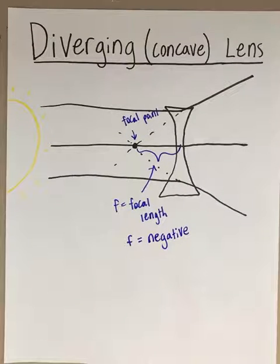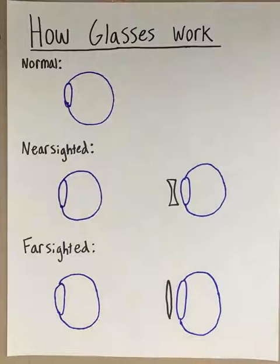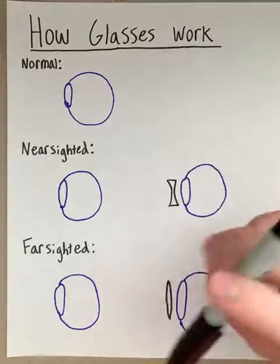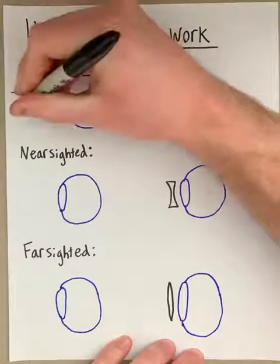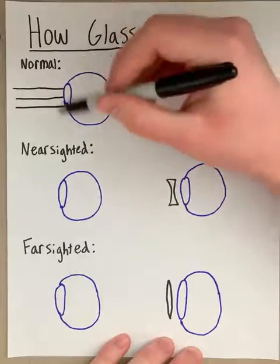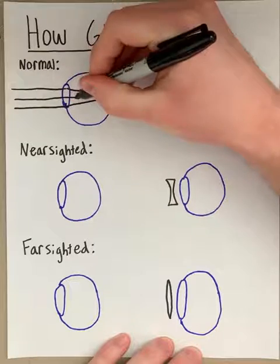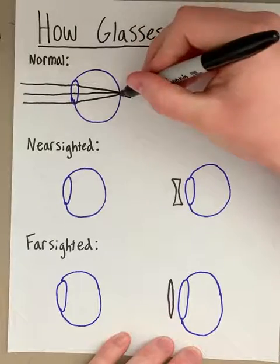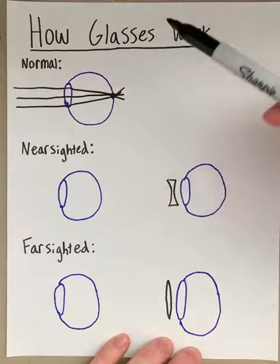These diverging and converging lenses come into play and are pretty important when it comes to glasses or contacts and how they work with our eye. Here we have a normal eye with light rays traveling into it — these represent the objects we see every day. As the light hits the lens of the eye, the lens acts as a converging lens, so it converges all those light rays back to a certain point, and that focal point lands on the back of the eye — the retina.